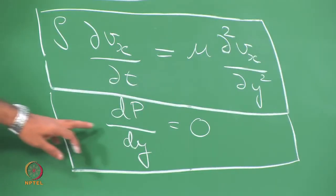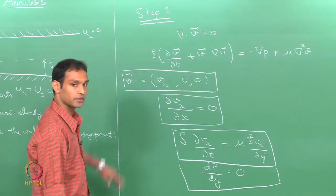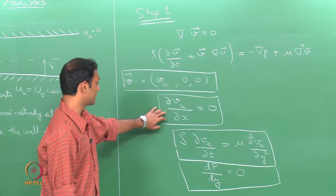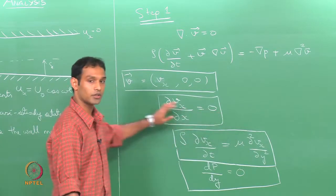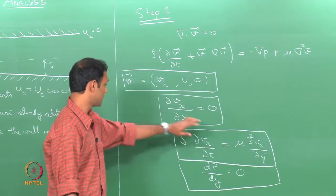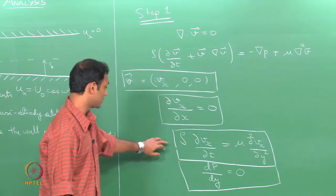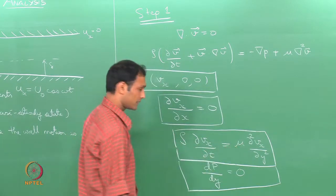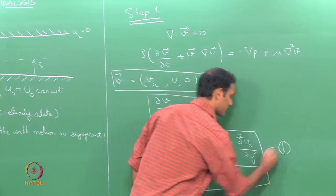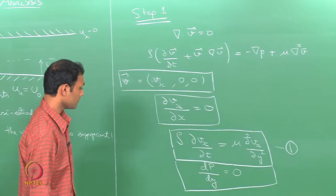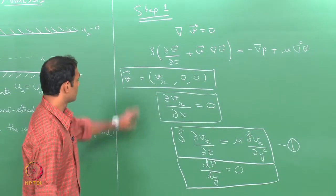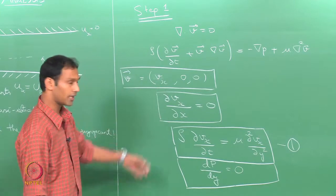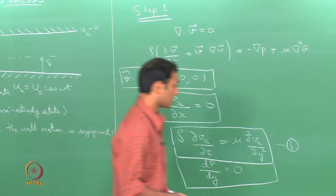We can neglect the pressure equation — it just tells me pressure is not changing in y — and the continuity equation tells me velocity in x is not going to change in the x direction. The basic equation we are left with is ∂vx/∂t = μ ∂²vx/∂y², which I will call equation 1. This completes step 1.